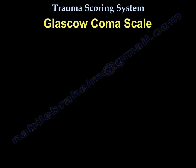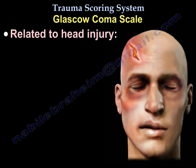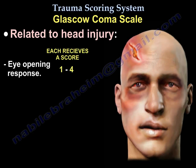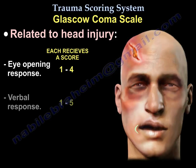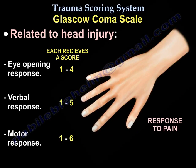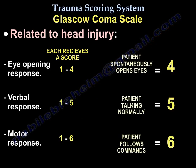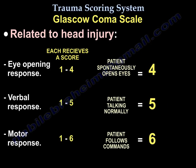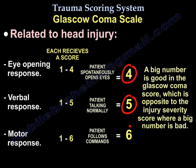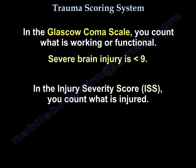There is the Glasgow Coma Scale, which is related to head injury — eye opening response, verbal response, and motor response. You want to have a big number; a big number is good, which is opposite to the ISS score where a big number is bad. In the Glasgow Coma Scale you count what is working, what is functional. In the ISS you count what is injured.